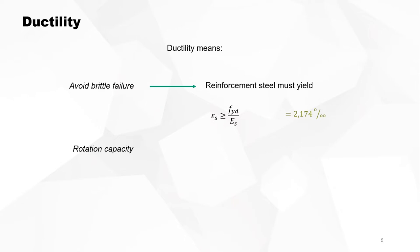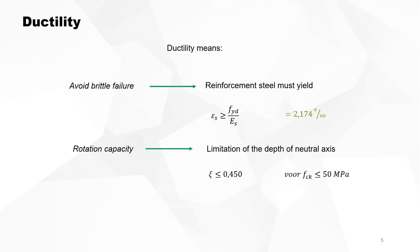Ductility also means rotation capacity. If you have a beam in a continuous framework you need a minimum rotation capacity, and to have rotation capacity you have a limitation of the depth of the neutral axis. This limitation should be less than half of the depth of the beam — the depth of the neutral axis should be smaller than 0.45 times the effective depth. This applies for concrete grade smaller than 50; for high strength concrete a different rule applies.